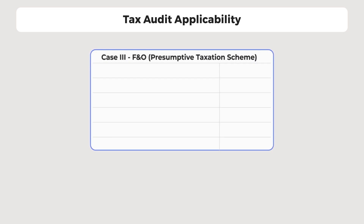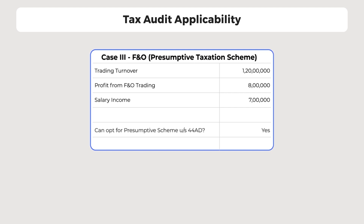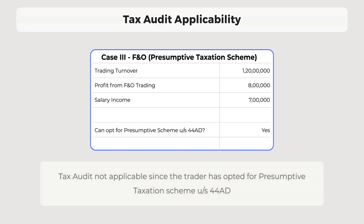Finally, consider a trader with a trading turnover of 1 crore 20 lakh. The profit for F&O trading is 8 lakh, which is more than 6% of the turnover, and the trader also has a salary income of 7 lakh. The trader can opt for the presumptive taxation scheme under Section 44AD, in which case the taxable income from business will be 6% of the turnover or actual profit, whichever is higher. Since the trader has opted for the presumptive taxation scheme, tax audit will not be applicable.